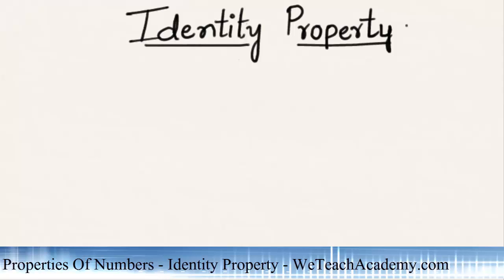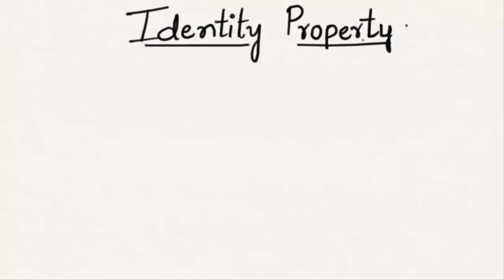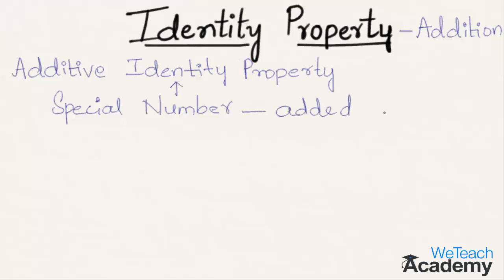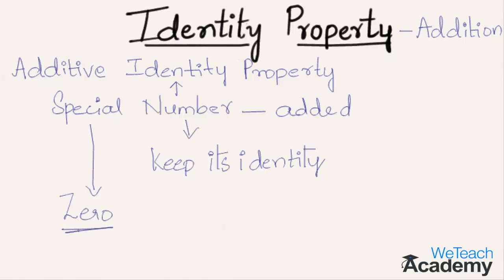Welcome to VTCHAcademy.com. In this presentation we are going to discuss identity property. The identity property of addition, also called the additive identity property, states that there exists a special number called the additive identity which, when added to any other number, that number will still keep its identity and remain the same. That special number is 0, which is the additive identity.